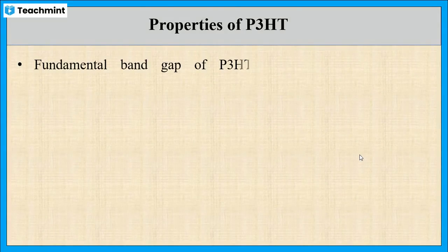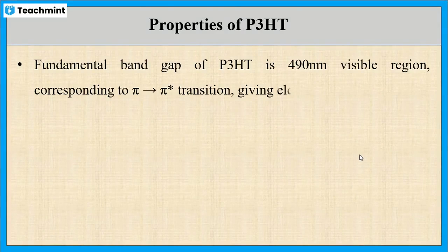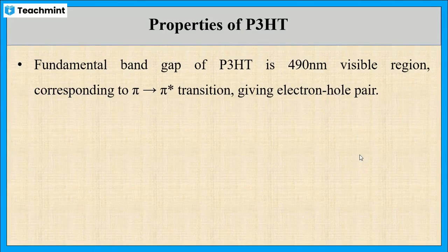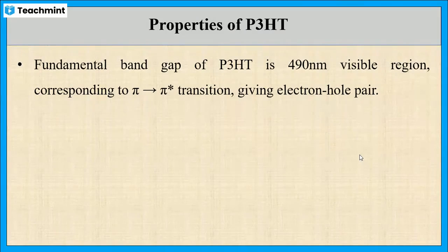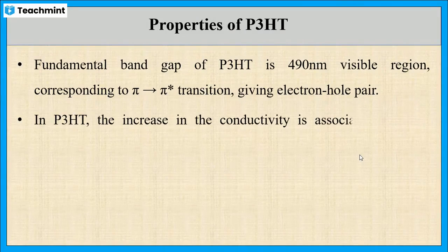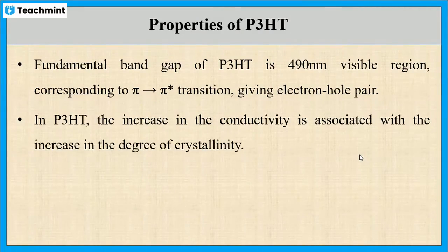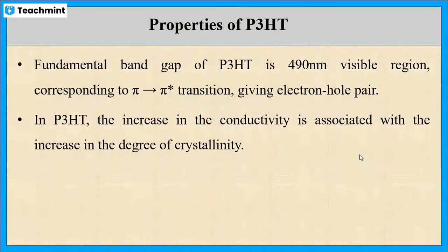Furthermore, the fundamental band gap of P3HT is 490 nanometers in the visible region, which corresponds to a pi to pi* transition, which gives rise to electron-hole pairs. Moreover, in P3HT, the increase in conductivity is associated with the increase in the degree of crystallinity.